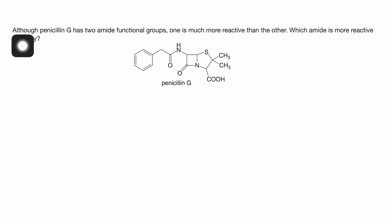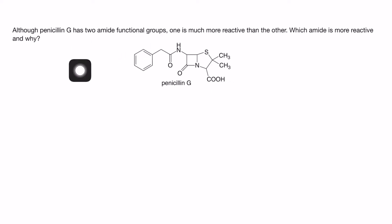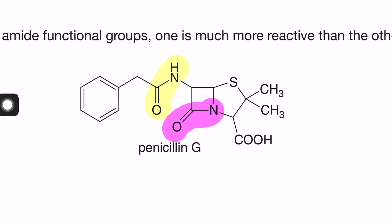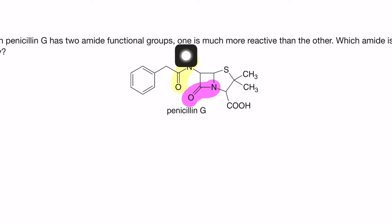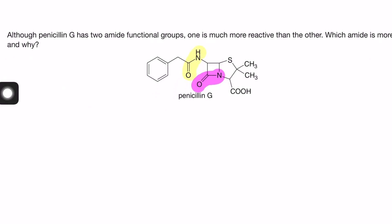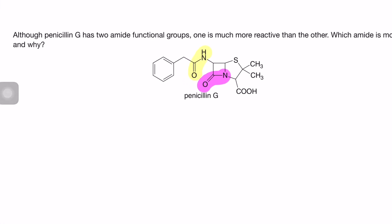So the question is: although penicillin G has two amide functional groups — if you see this molecule, it has two amide functional groups. This is the first one, this is the amide linkage, and this is the second one. Out of these, one is more reactive than the other. Which amide is more reactive and why?